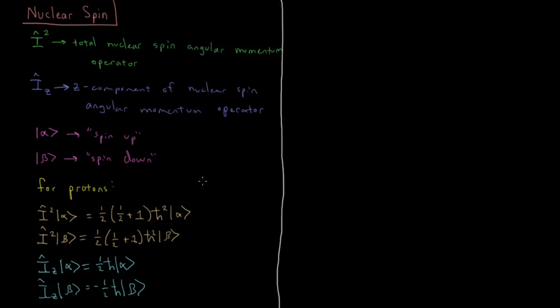These have the same kinds of properties that we talked about for electrons in terms of their orthonormality. For example, the integral alpha alpha in Dirac notation, which would be the integral of alpha star, the complex conjugate, as a function of the nuclear spin variable tau. We use sigma for electrons, it's going to be tau for nuclei.